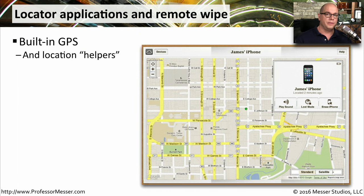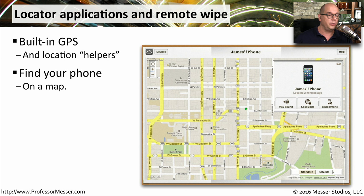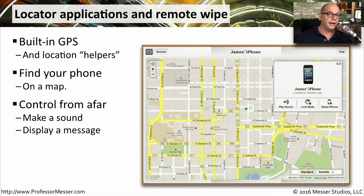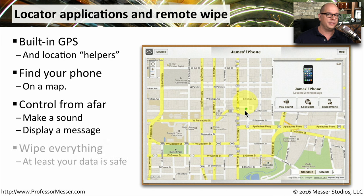Today's modern mobile devices can use GPS to give you a very precise location of where your device might be. Many devices can also use a Wi-Fi network or your wireless provider's network to help locate the device. It will put a location on a map and show you exactly where your device is. You're even able to control the device remotely — you can make it play a sound, display a message on the screen, or choose to remotely wipe and erase everything on that mobile device.